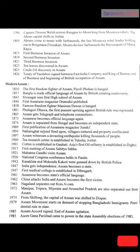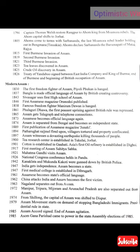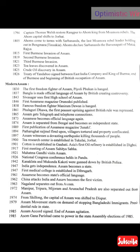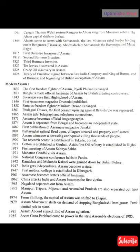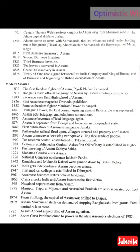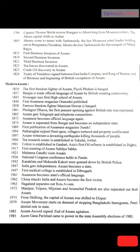Around 1805, the Ahom come to terms with Sarbananda, the last Moamaria rebel leader holding out in Bangmara, Tinsukia. The Ahom declare Sarbananda the Bor Senapati of Matak Rajya. An important note: Bangmara is the old name of Tinsukia — this question appeared in the Assam Secretariat exam recently and may also appear in the AJS exam. In 1815, the first Burmese invasion of Assam takes place. The second Burmese invasion was in 1819, and the third in 1821.